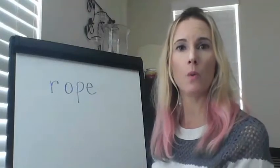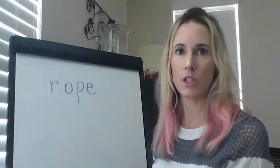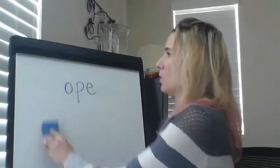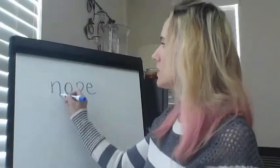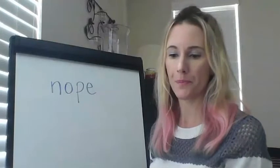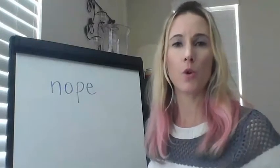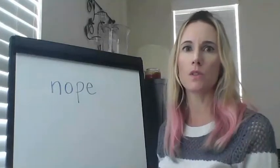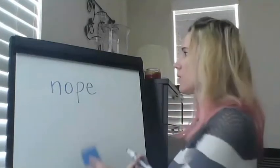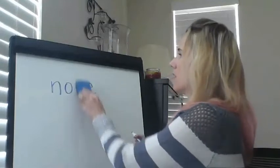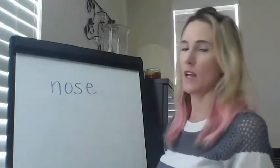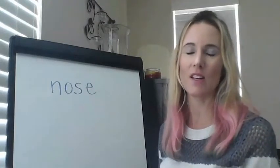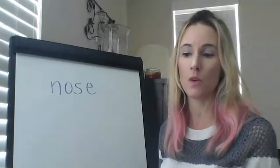Rope is going to change to nope — think to yourself, where is the sound changing? Out goes the R, in goes the N. Nope. Now nope is going to change to nose — nope, nose. Out goes the P, in goes the S. And remember, it's voiced this time — I said S because that's the common sound for S, but we're voicing it. So nose.